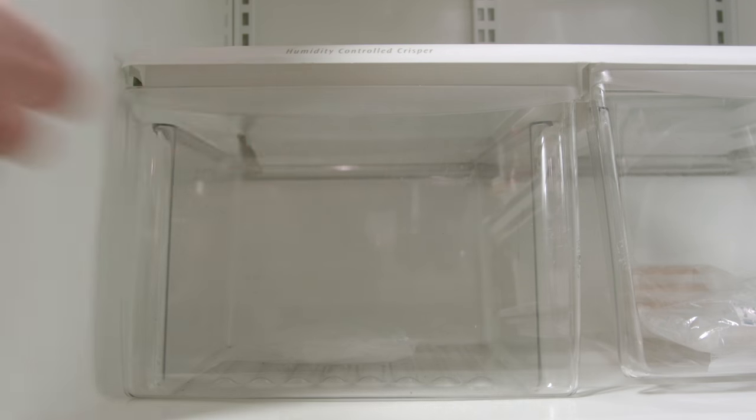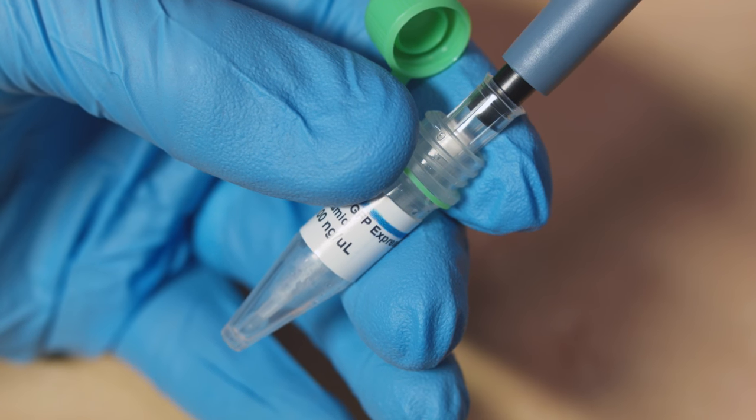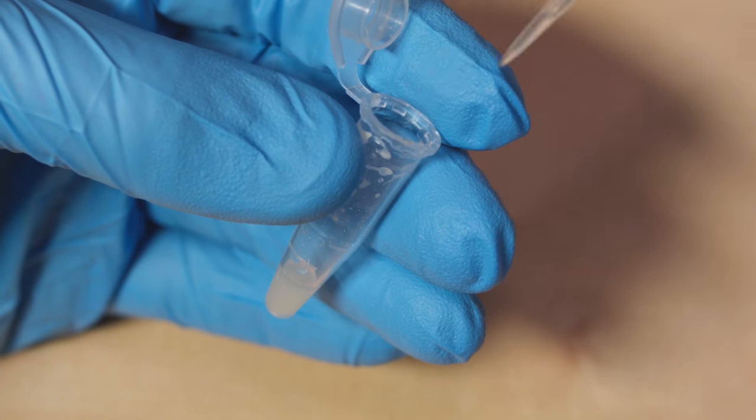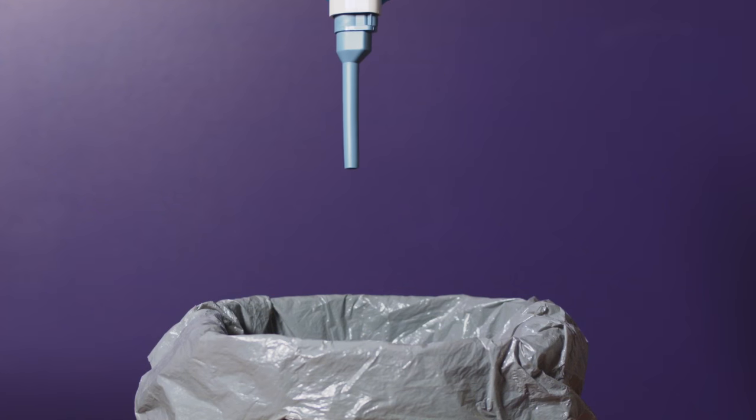Now back to the yeast. Grab the yeast GFP expression plasmid tube and pipette out 10 microliters into your yeast competent cell mix. Discard the tip.